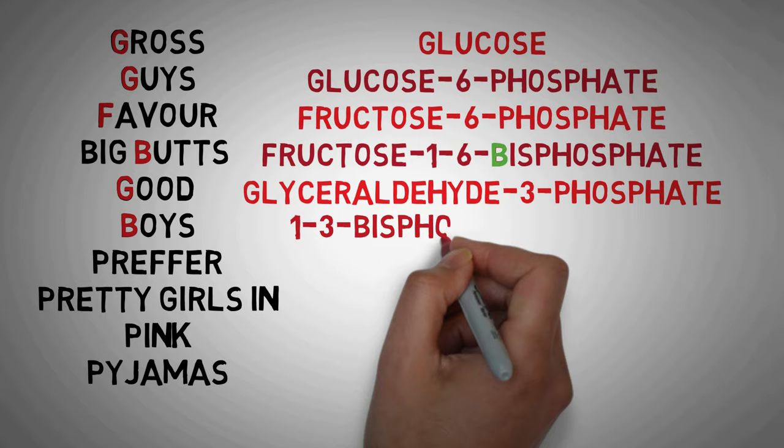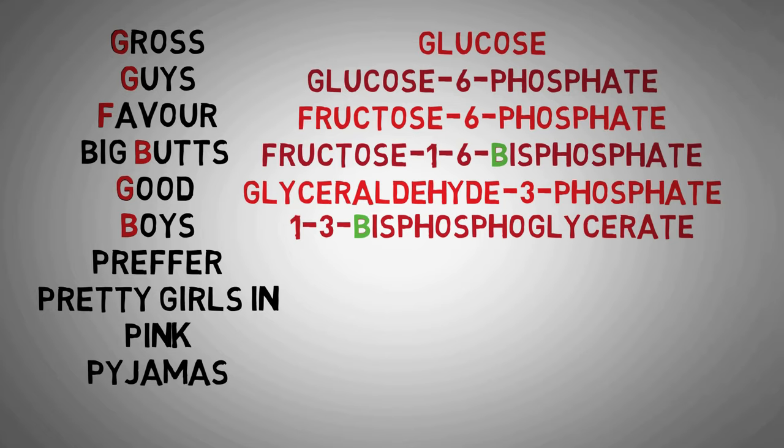The next word is boys, which stands for bisphosphoglycerate, more particularly 1,3-bisphosphoglycerate. So the last line in the mnemonic was good boys prefer pretty girls in pink pajamas, and here you can see the next few molecules that come in the pathway of glycolysis.